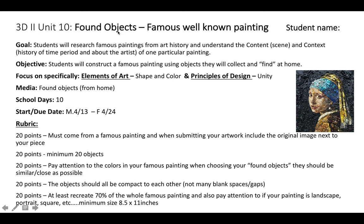The name of this project is called the Famous Well-Known Painting and you're going to be using found objects again. For your project notes this week, you're going to be researching a famous painting from art history and understanding the content — what the scene is, what is going on in that particular painting — and the context, meaning the history of the time period, what's going on, whether it's during a particular war or cause, and background about the artist.